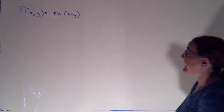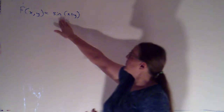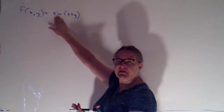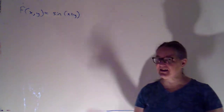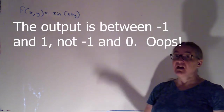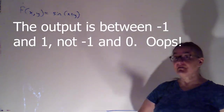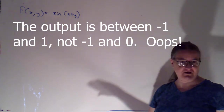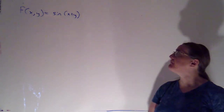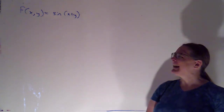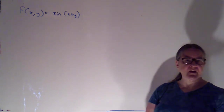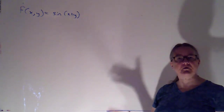First of all, the output of this function, because it's sine of something, has to be between negative 1 and 1. Those are the highest and lowest values that we can get, so those are going to be important values. And 0 is also kind of important. So let's start with those.